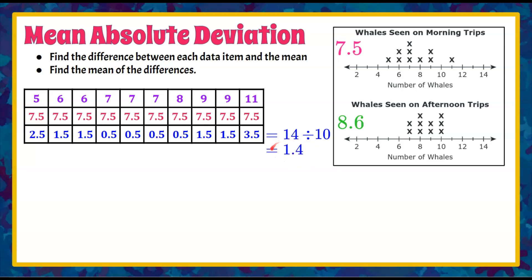So 1.4 is our mean absolute deviation for whales seen on morning trips. What that tells us is that if the average was 7.5 whales, we're pretty sure we'll see approximately 7.5 whales because the data only deviates by 1.4 — meaning either 1.4 less or 1.4 more. Looking at the line plot, most of our data falls between about six and nine, with only two data points outside that range, which makes sense.